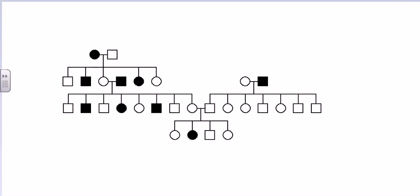Welcome back. Let's solve this pedigree problem. They are asking us what is going to be the pattern of this particular disease. There are four different possibilities: autosomal dominant, autosomal recessive, sex-linked dominant, and sex-linked recessive.